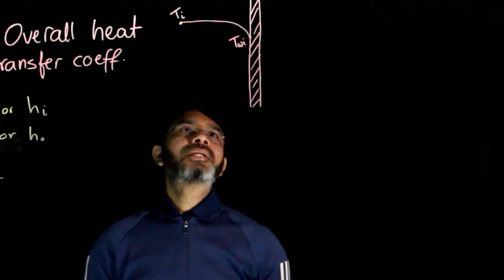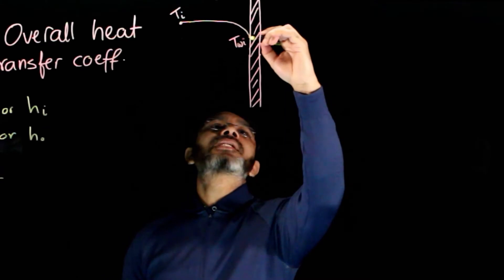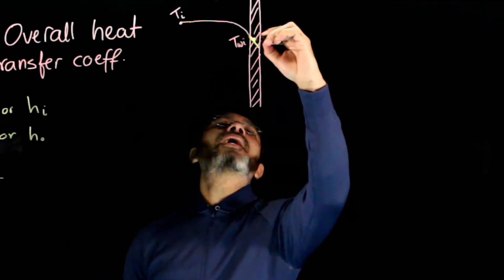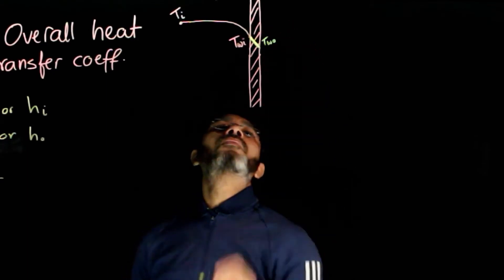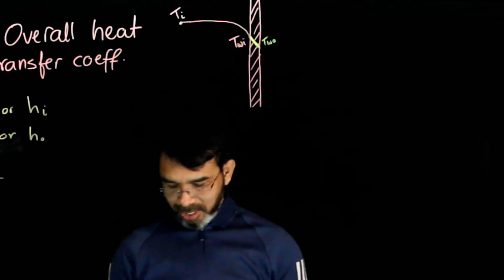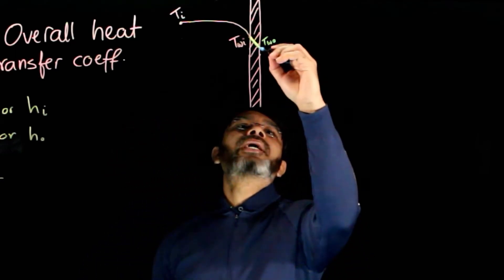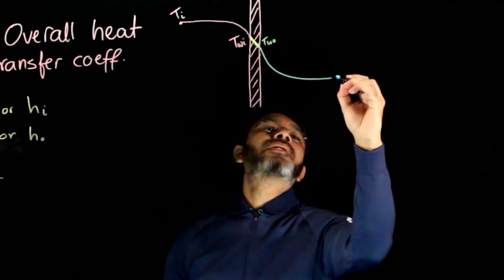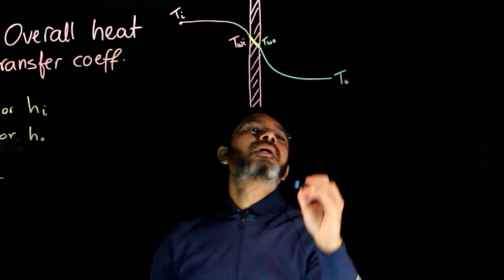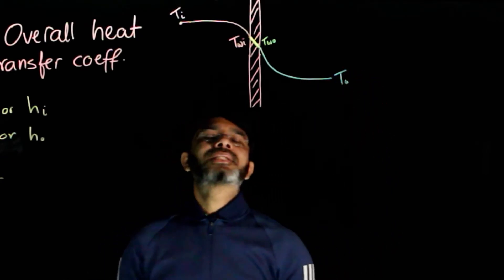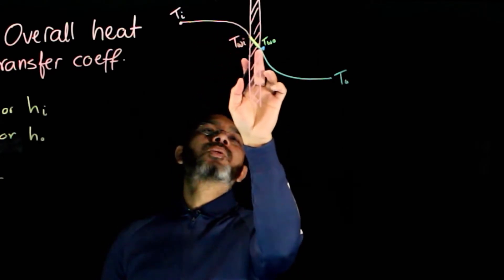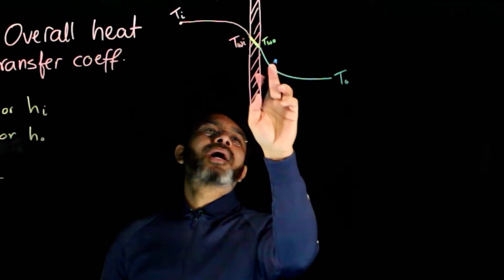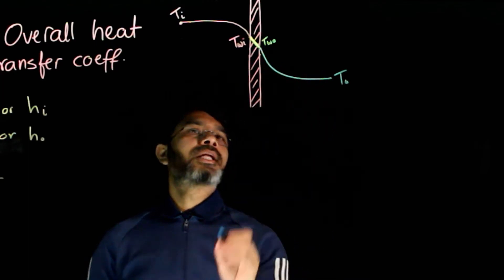Through the wall, the heat will transfer again and we will have another temperature drop. Consider T_WO as the outside wall temperature, and then outside there will be a temperature profile. Note that it is the same amount of heat going from the fluid to the wall, through the wall to the other side, and then to the other fluid.